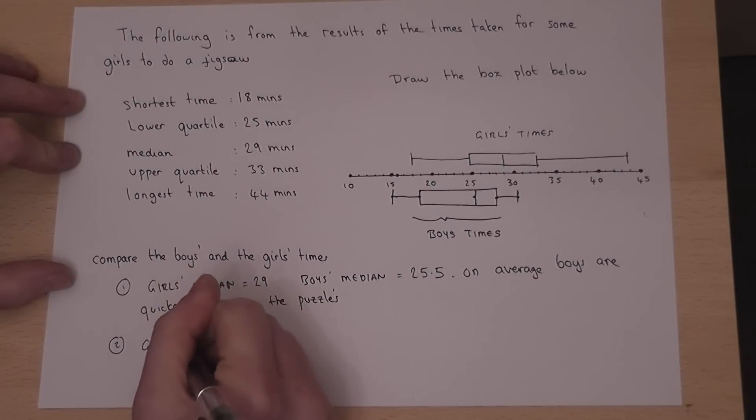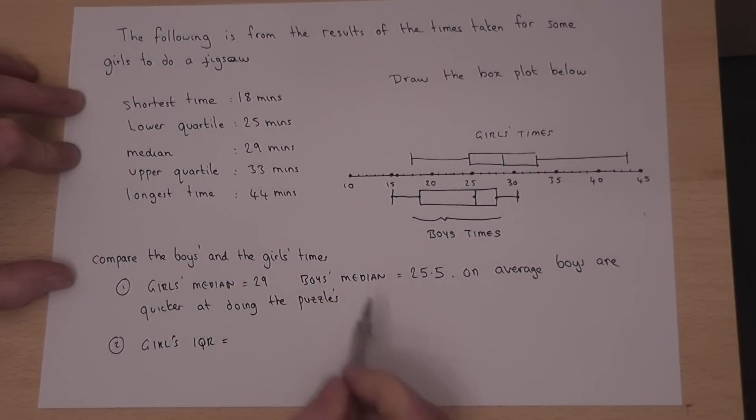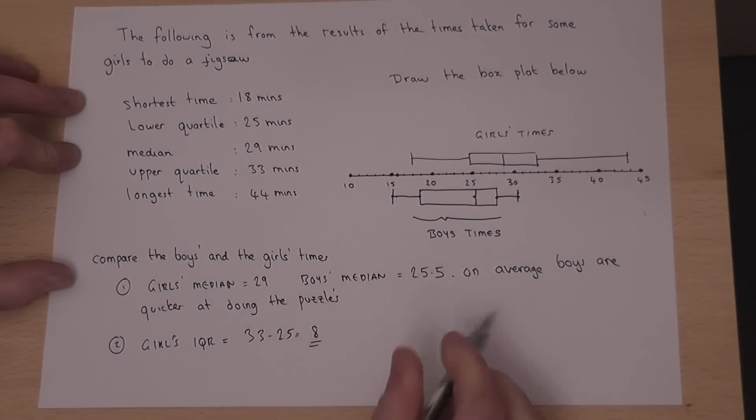Now, the girls' interquartile range is found by doing the upper quartile, take the lower quartile. So 33, take 25, is 8. That's 8 minutes.